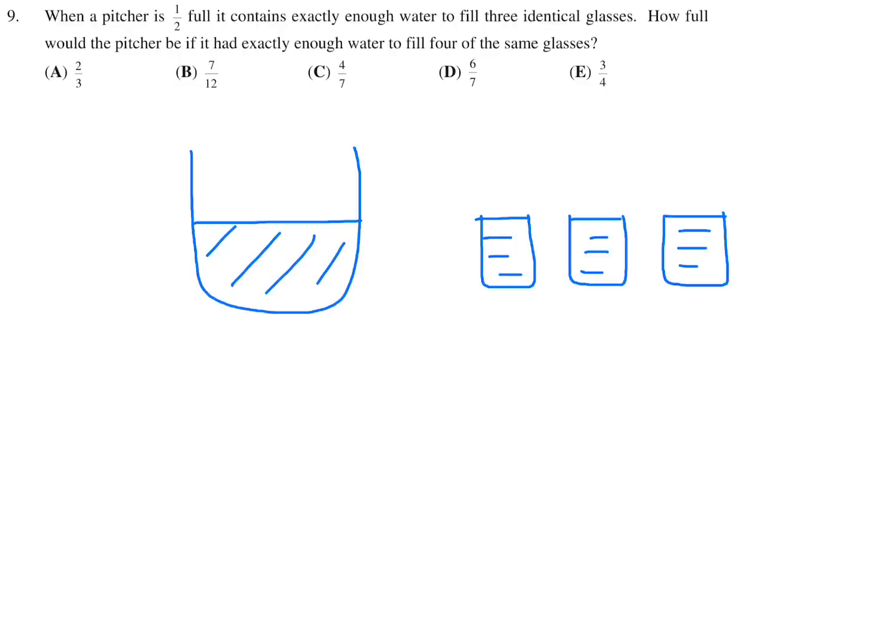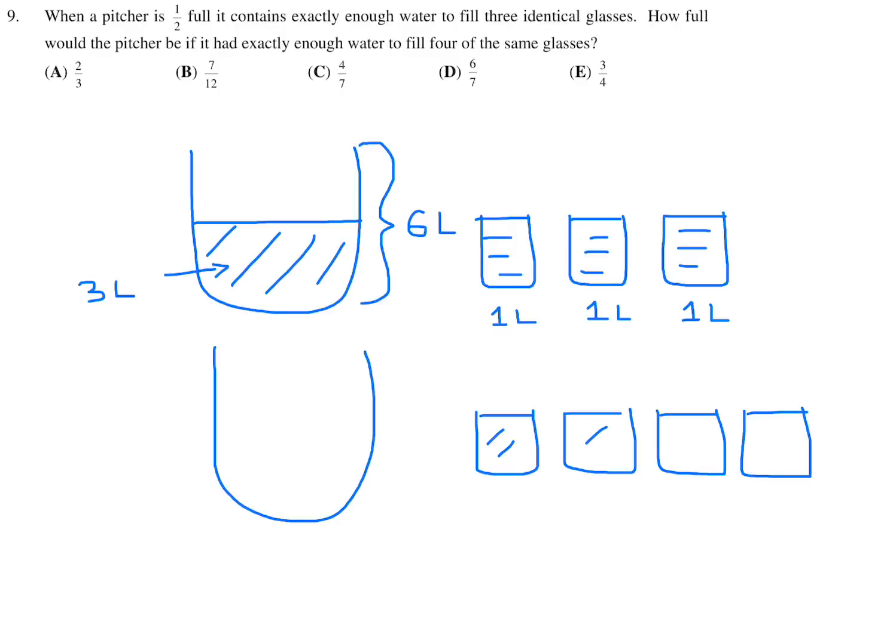To make things easy, let's just give it a value. Let's say this is one liter. It's a very big glass. And therefore, this is three liters, because this water was poured into these to fill those glasses. And they're saying that this is half full. So therefore, the total capacity of this pitcher is six liters. Now, they want you to figure out a second scenario, where you have four glasses, and those four glasses are all full, and that quantity of water is now in the pitcher. Same pitcher. Well, this is now four liters. So this is four liters. And four liters in a pitcher of capacity of six liters is four over six, or two over three. And that is choice A.